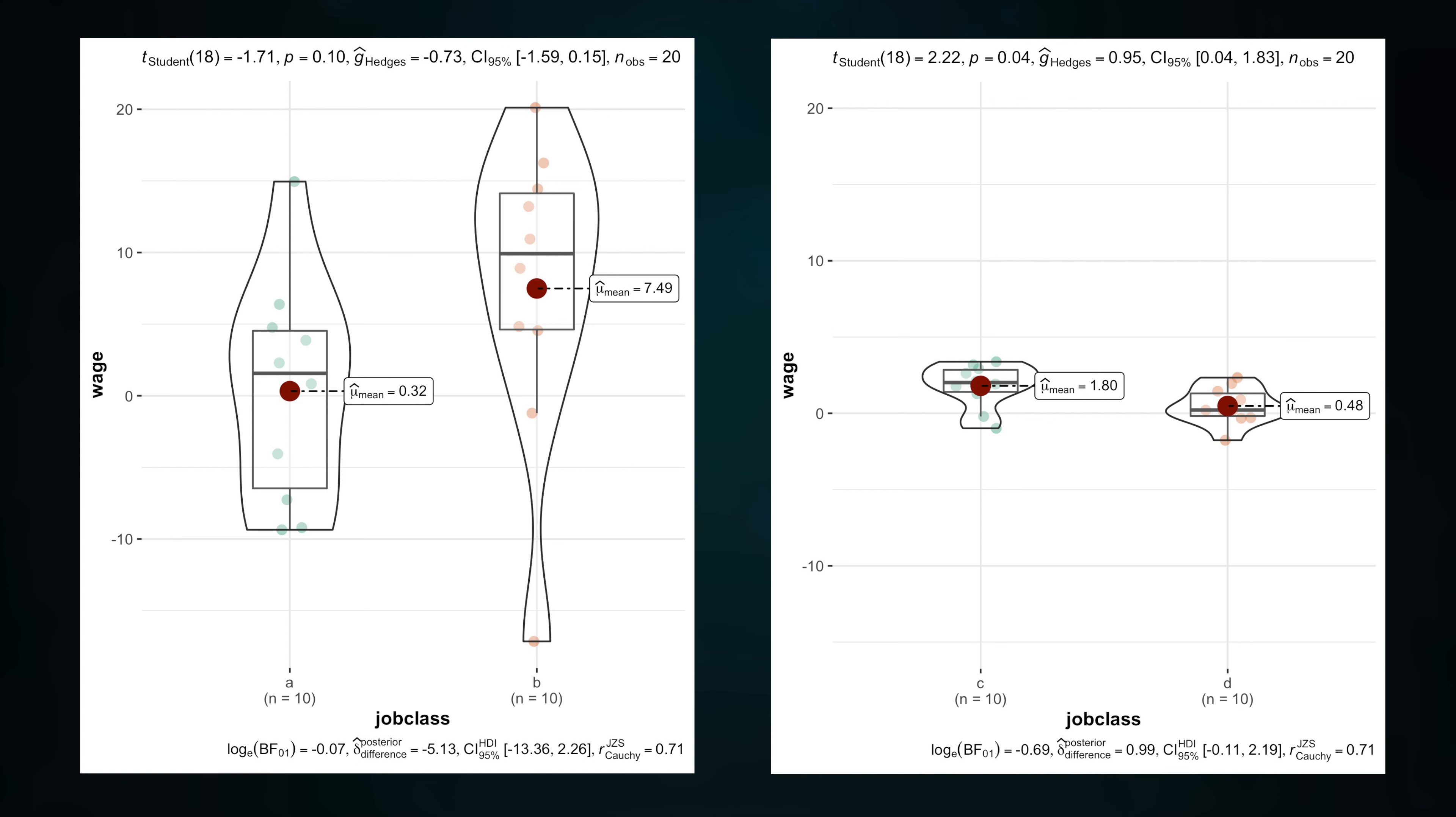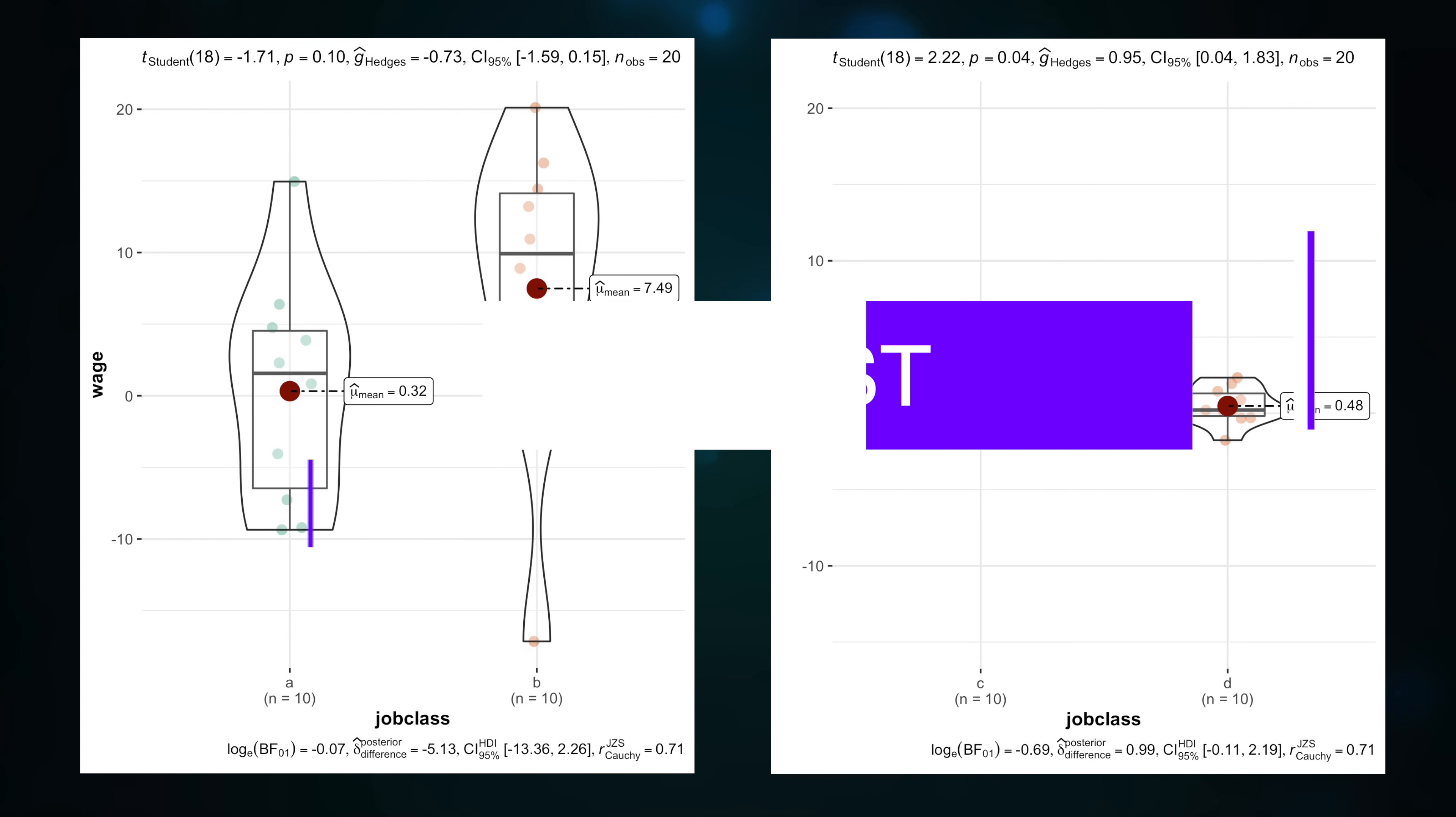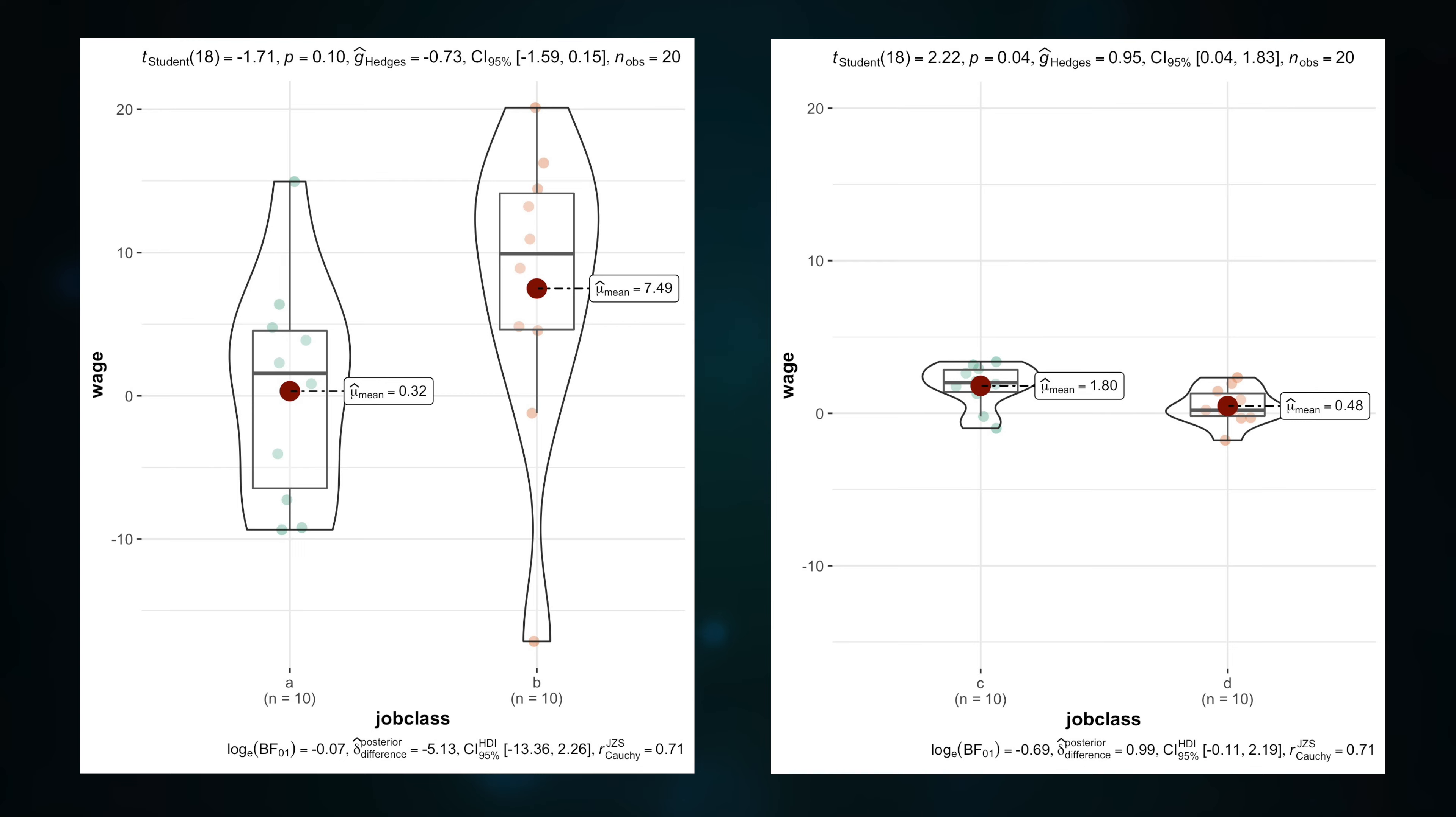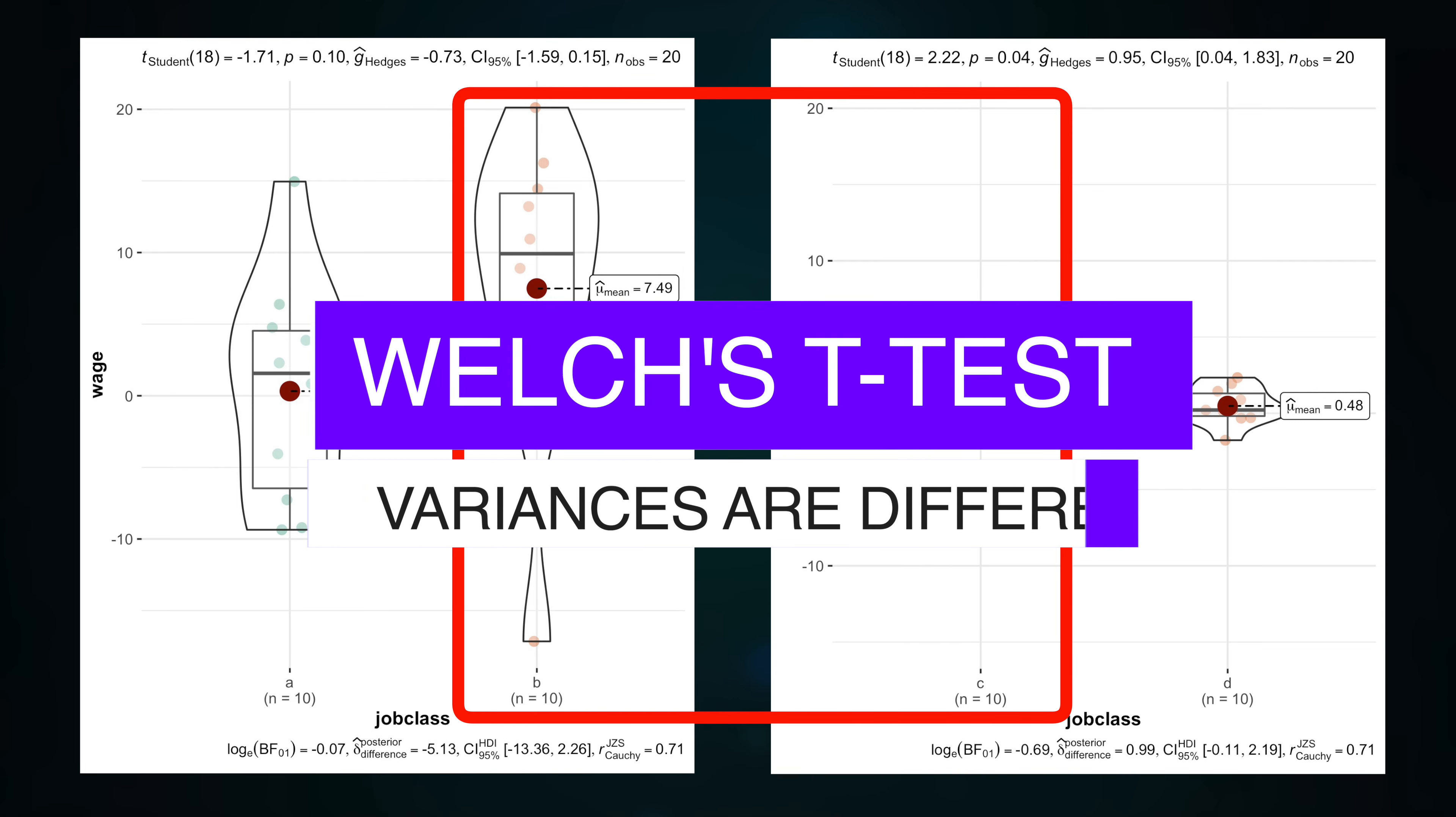So, the variances between two samples can be either different, sometimes called heterogeneous, or similar, sometimes called homogeneous. And we need to know which one is true, because a classic student's t-test can be applied only when variances are similar, while two samples with different variances should be analyzed with Welch t-test.